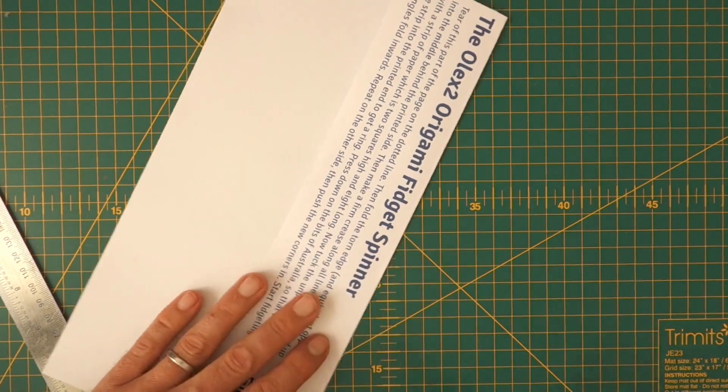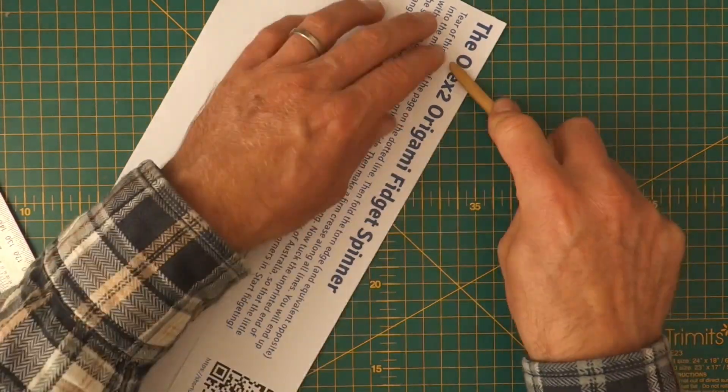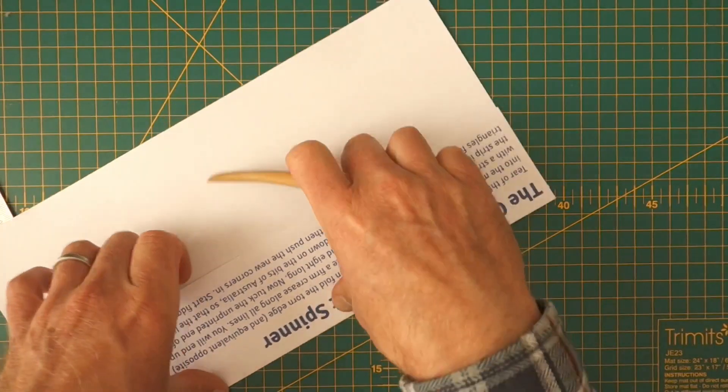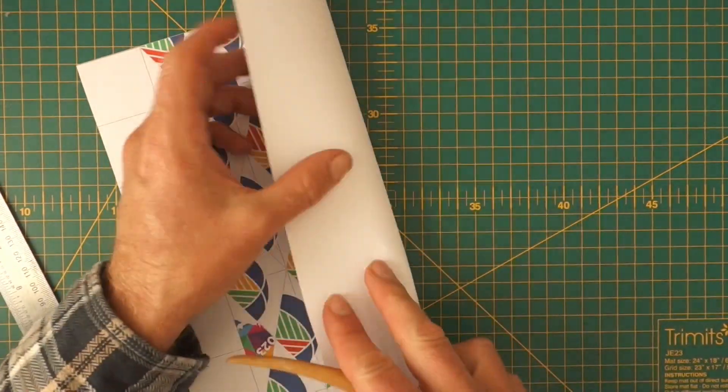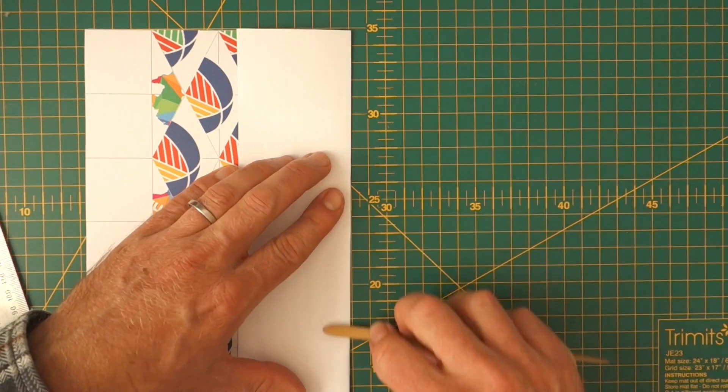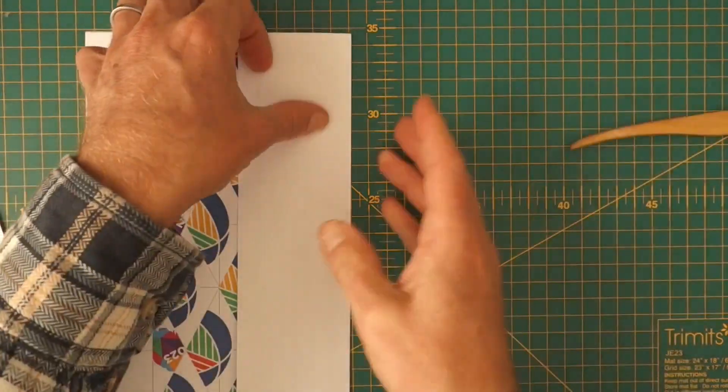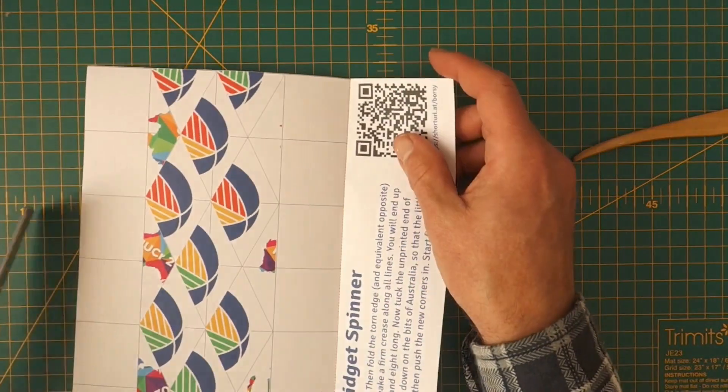It also helps to have a little tool to smoothen down the edges because good creases is quite important to make this thing work properly. So once we've creased this a few times, tear it off.